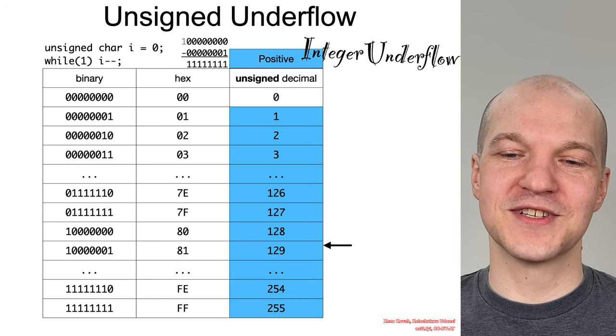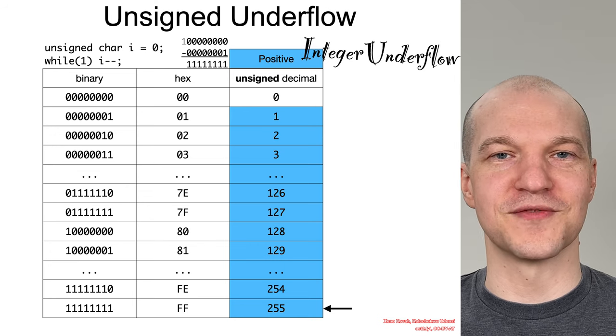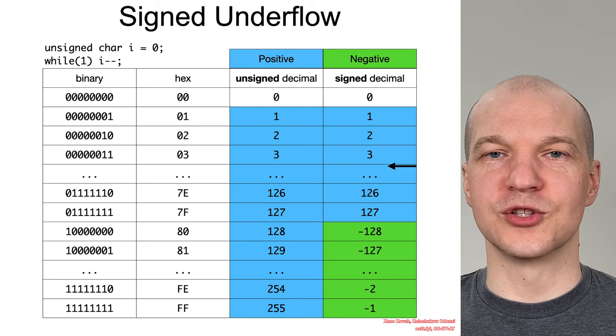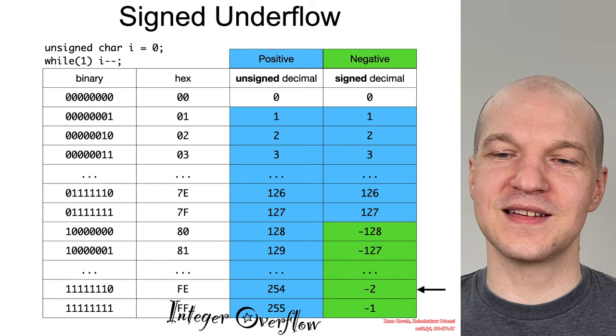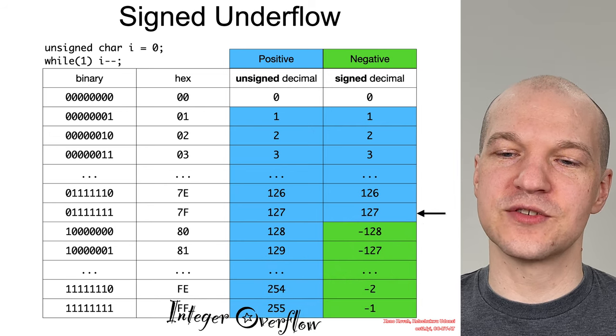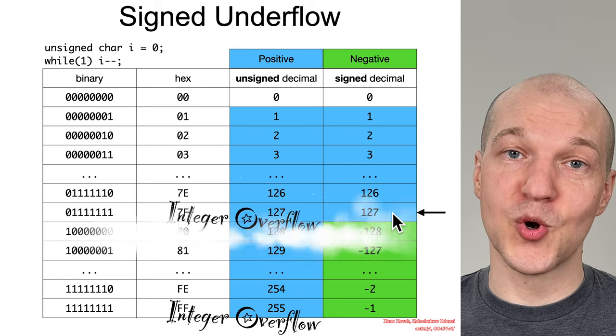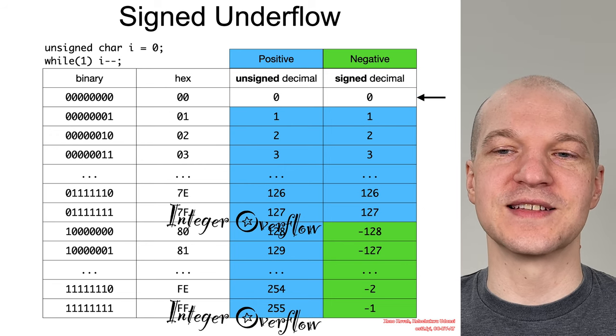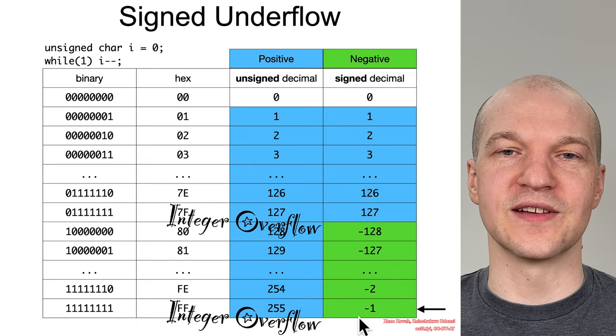All right, and you just keep decrementing, decrementing, decrementing, and once again loop around integer underflow. In the context of signed values, same thing. Loop around. Boom! Integer underflow. And decrementing, decrementing. And once you cross this negative to positive boundary, boom! Integer underflow. And of course, you just keep decrementing it again. It's an integer underflow once you cross over from zero back to negative values.